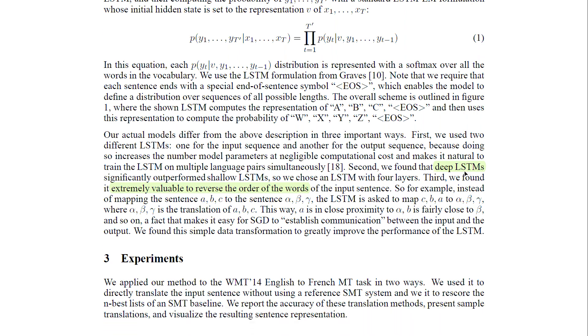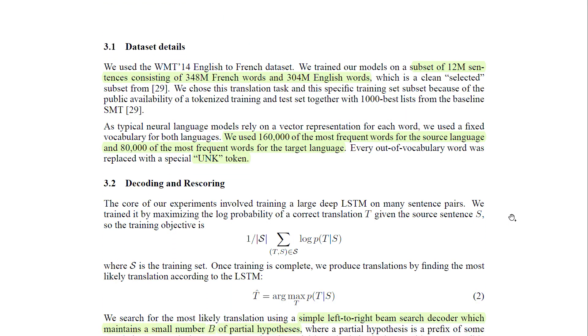And then they say that training these deep LSTMs is a very major point as well. And then also reversing the words seem to work well for them in this paper. And then some data set details in that they train the model, they use a subset of 12 million sentences where they had 348 million French words and 304 English word. And then they also used the 160,000 most frequent word for the source and then 80,000 of the most frequent for the target language.